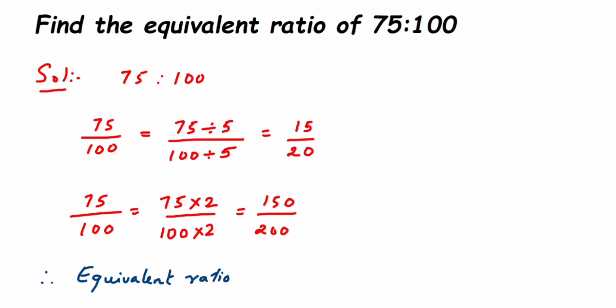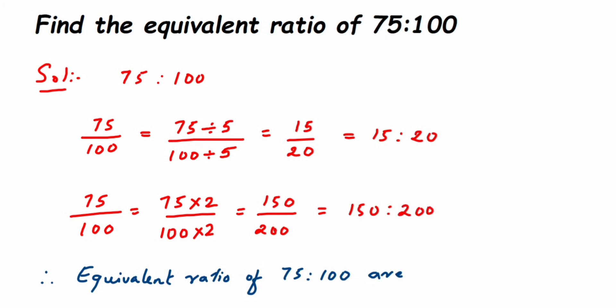Therefore, the equivalent ratios of 75 is to 100 are: 15 is to 20, and 150 is to 200. We can actually find many equivalent ratios — we've just found two here. I hope it's clear how we solved this. If you have any questions or doubts, you can drop a comment below. Thank you so much for watching.